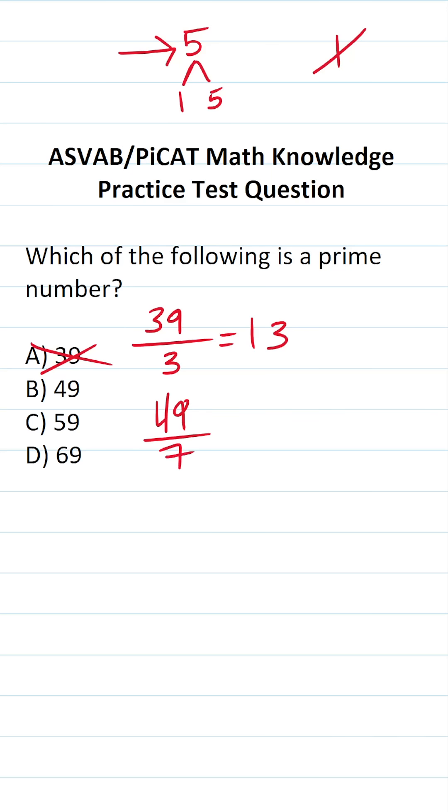What about 49? 49 is divisible by 7. Therefore, it can't be prime.